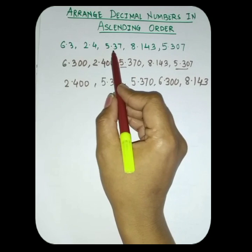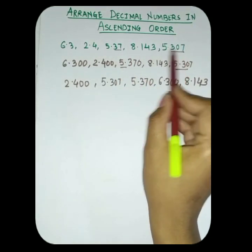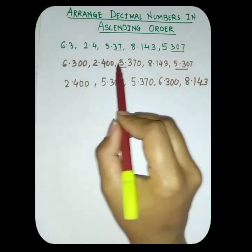See, if you didn't convert this, you may get confused that here it is 2 digit and here it is 3 digit. So this will come first and this will after. But as you have converted, you can know that this is first and then that comes.